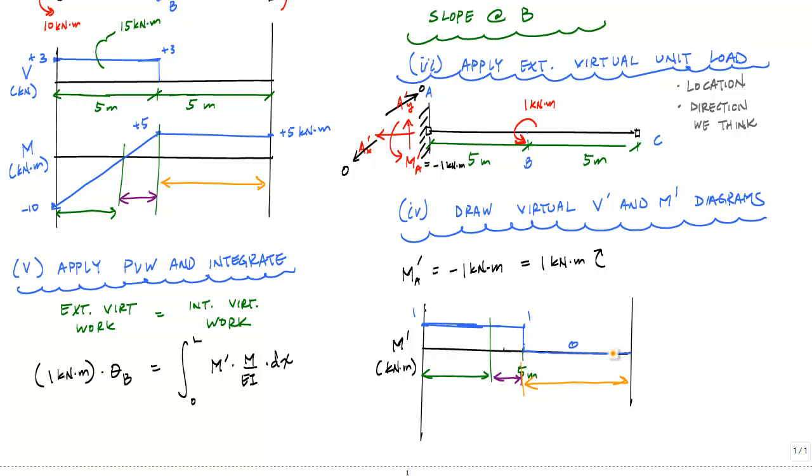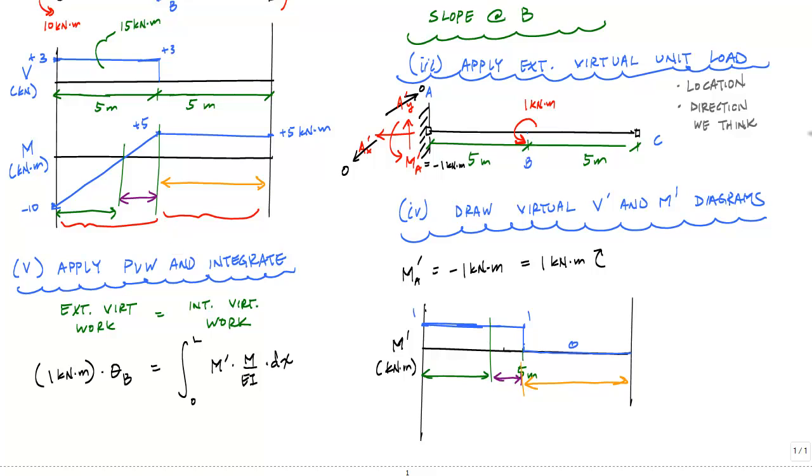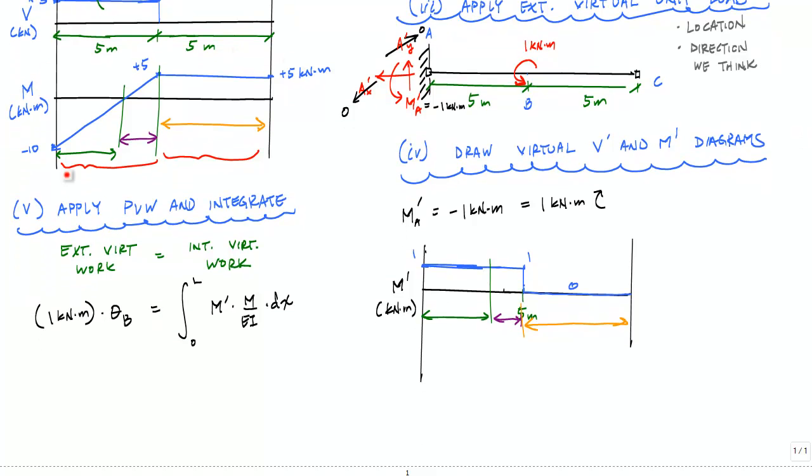The other choice you have is to come up with moment functions describing these moment diagrams and integrating. If I choose to have moment functions, I'm going to have a moment function to describe this first segment right here, the linear portion. Then I have a discontinuity, which means I would have a second moment function here, five to ten meters. And this is a pretty simple moment function to describe.